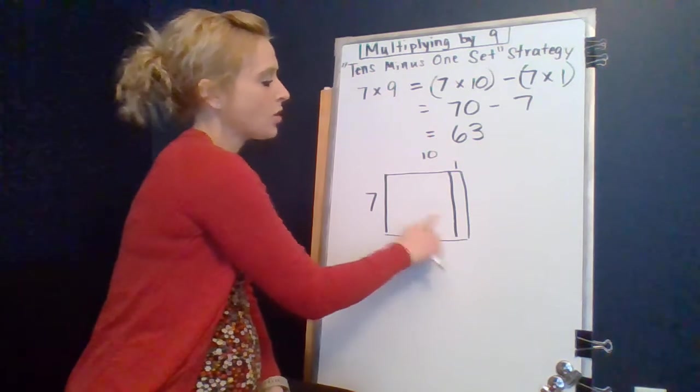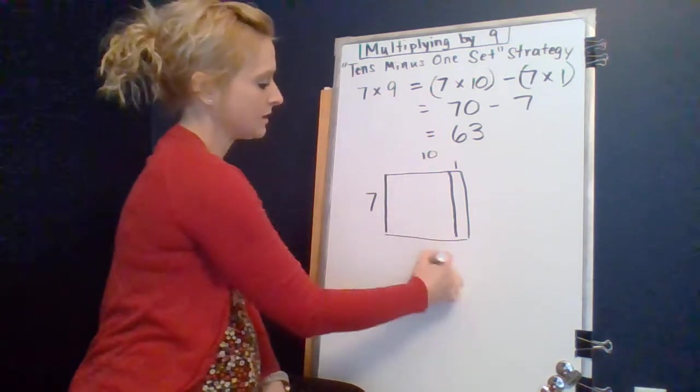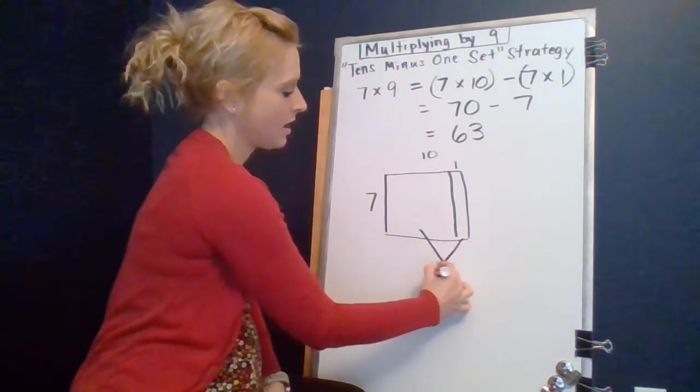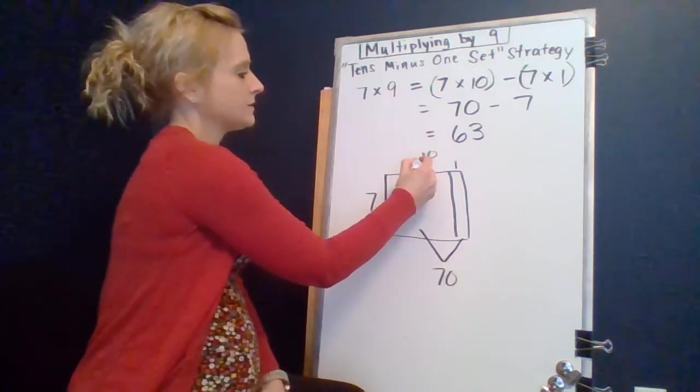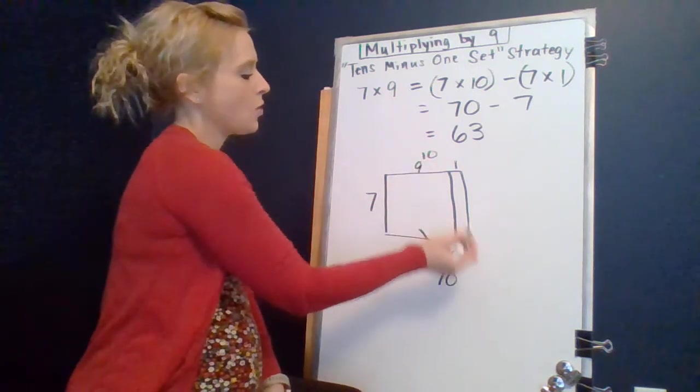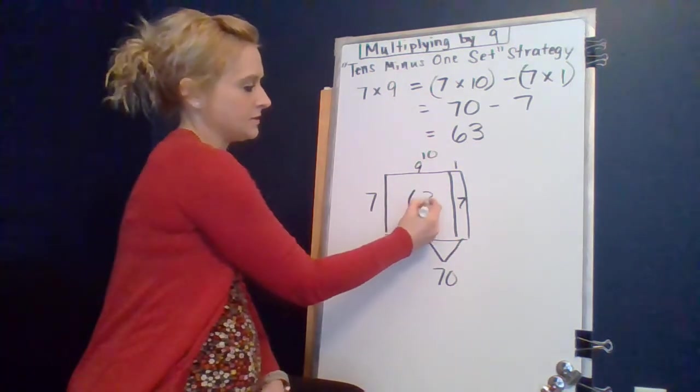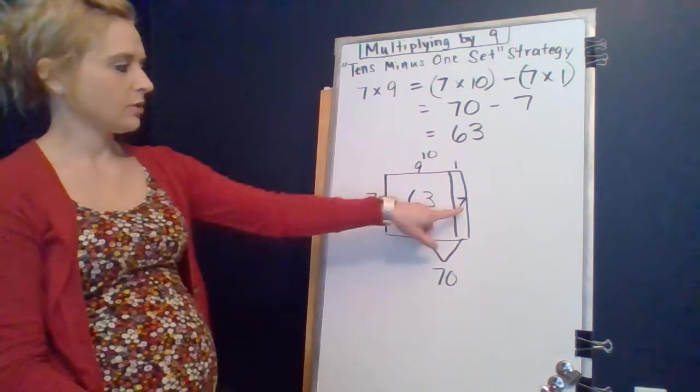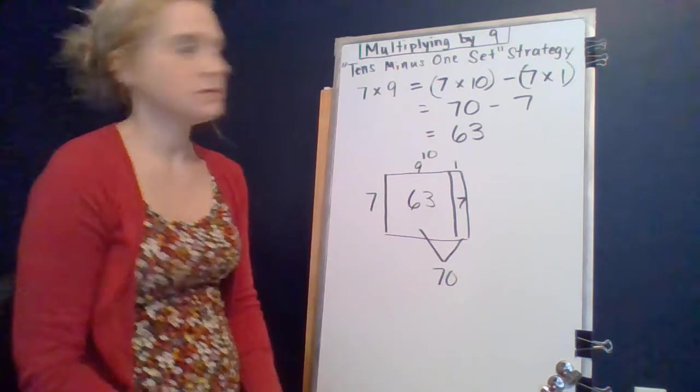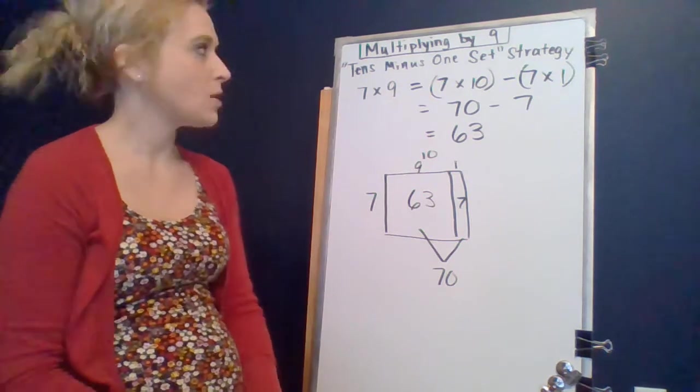So let's remove that one group. So we no longer have the seventy in there, but it's going to be a combination of these two. So this is nine groups there, so we are removing a group of seven. And so this has to be the sixty three. So sixty three and seven make the seventy. So that is the tens minus one set strategy.